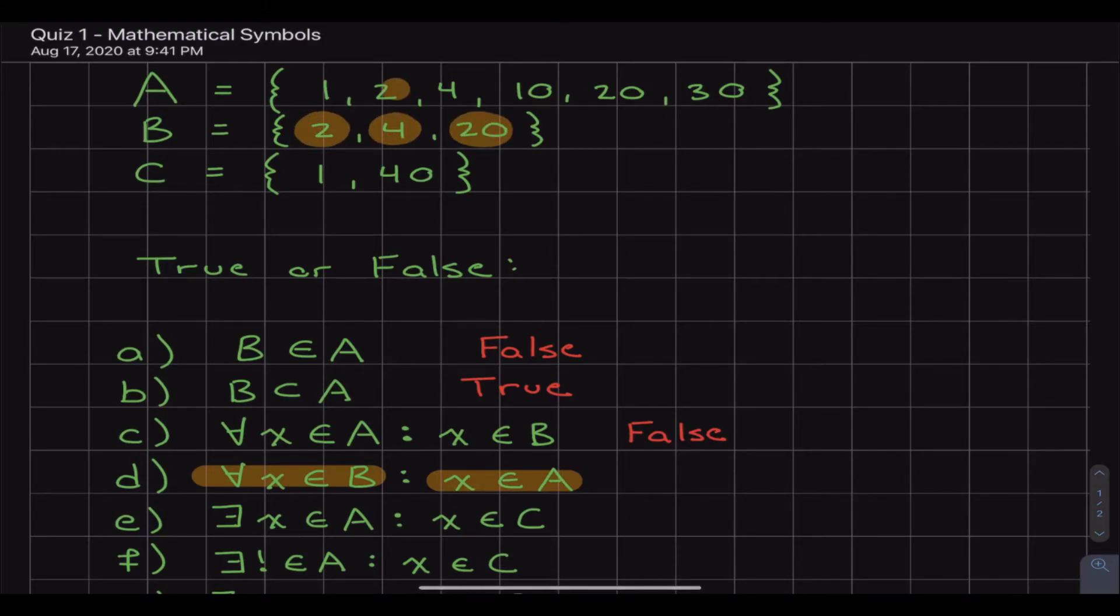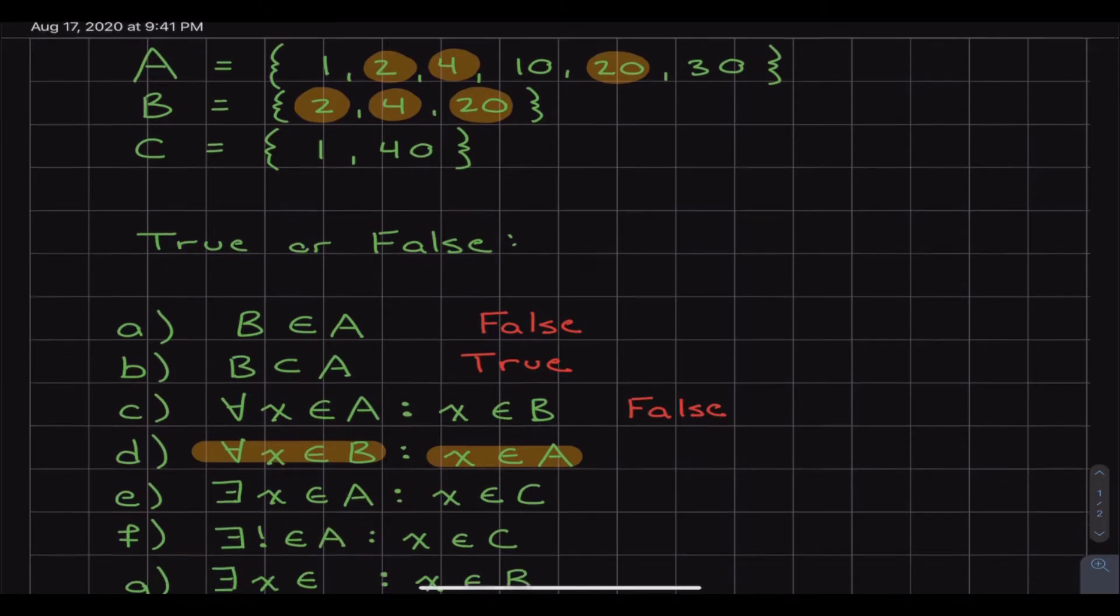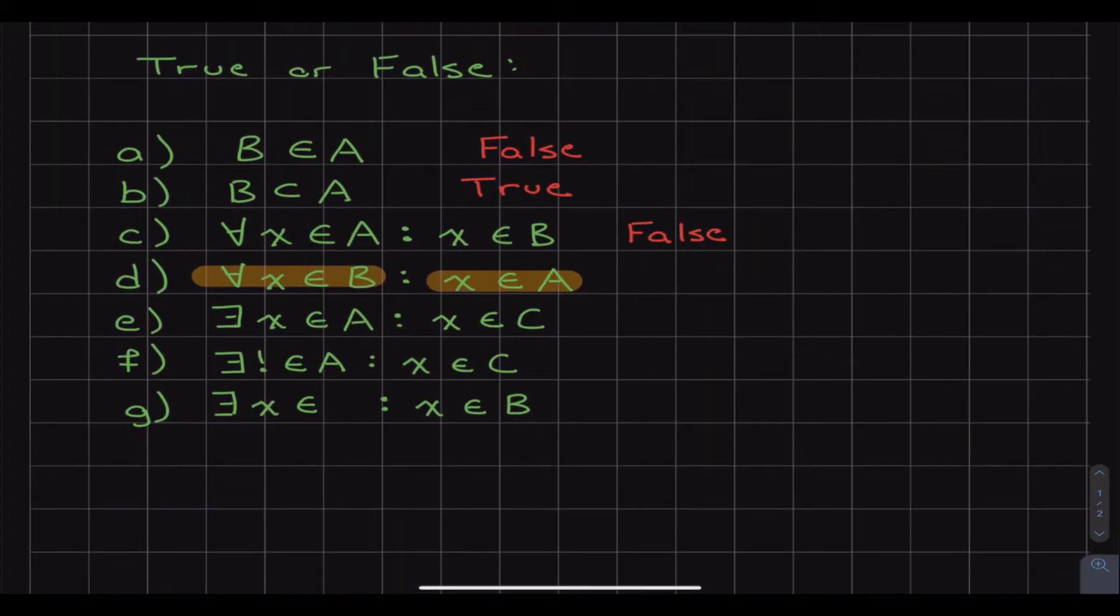Because if we look, we have the 2, we have the 4, and we have the 20. And if we look at A, we have the 2, we have the 4, and the 20. So we can conclude that yes, the statement is true because every number that we found in B does appear in A. So this statement right here is true. We can just write true. Good to go.